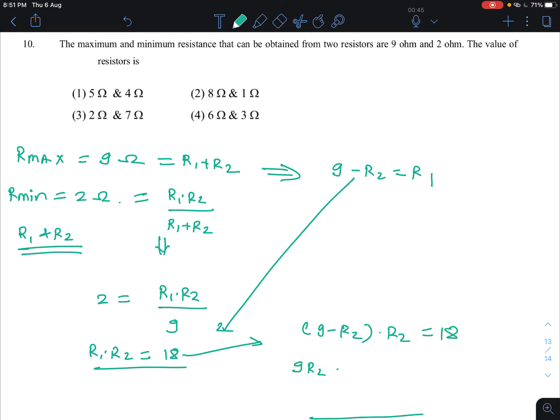So this is 9R2 minus R2 square is equal to 18. So R2 square minus 9R2 plus 18 is equal to 0.